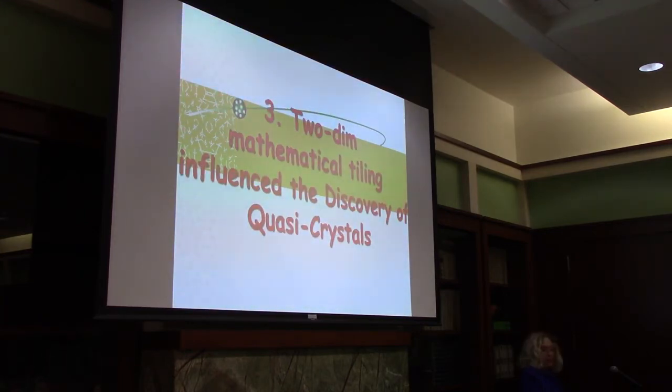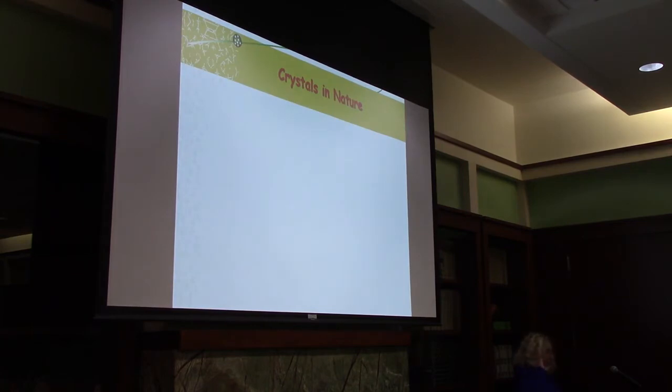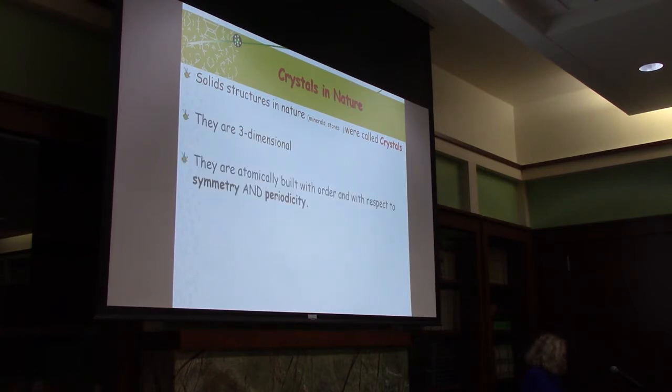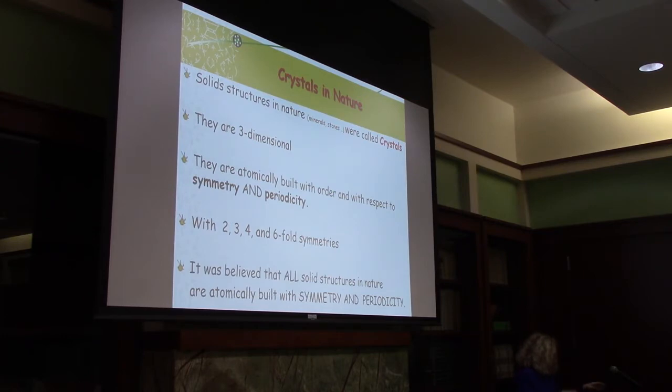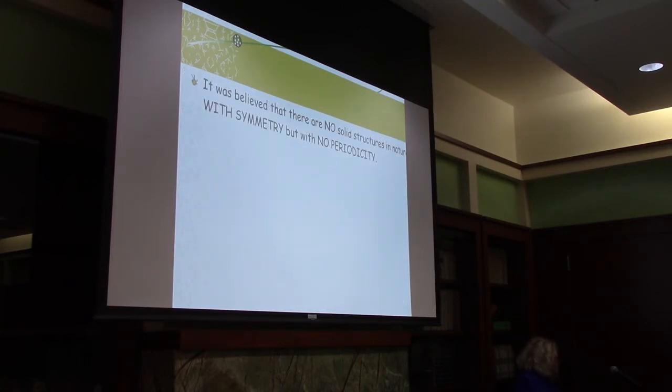The third appearance comes from two-dimensional mathematical tiling. I leave tiling for a moment and talk about crystals in nature. Solid structures in nature, minerals and stones are called crystals. They are three-dimensional, atomically built with symmetry and periodicity. The symmetry can be two-fold if it's 180 degrees rotation, or three-fold, four-fold, six-fold. It was believed that all solid structures in nature have atomic symmetry and periodicity. No solid structure with symmetry and no periodicity.